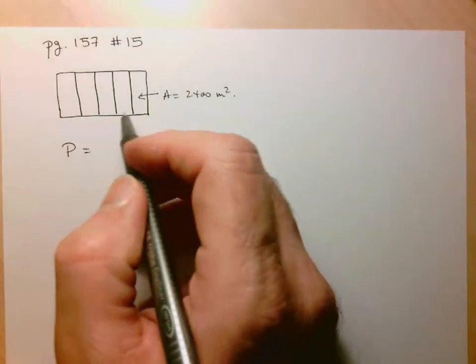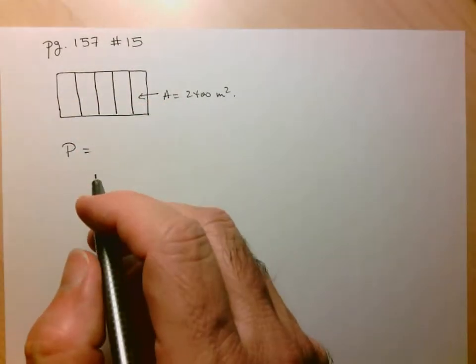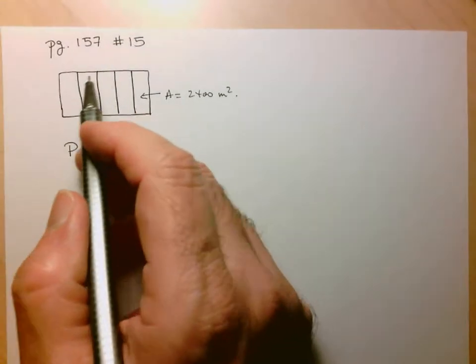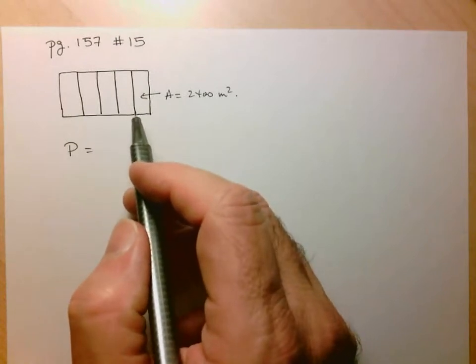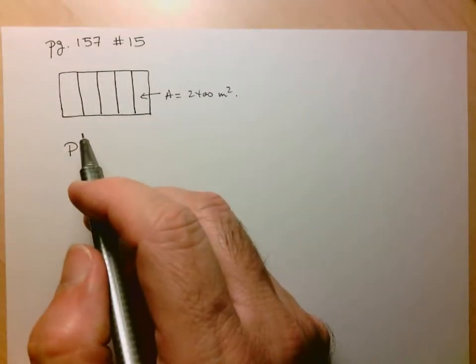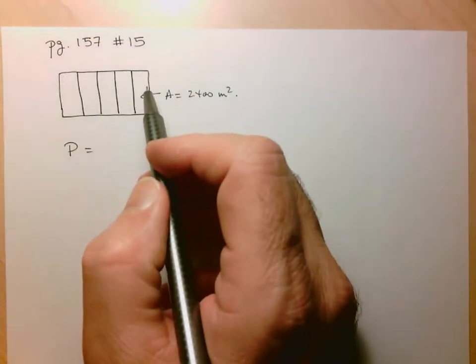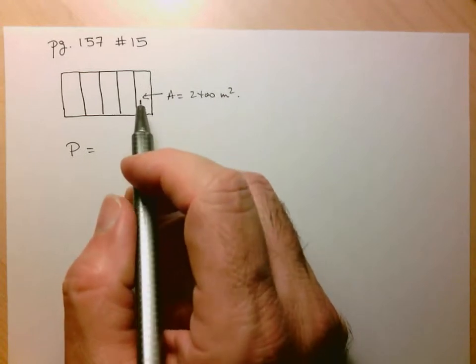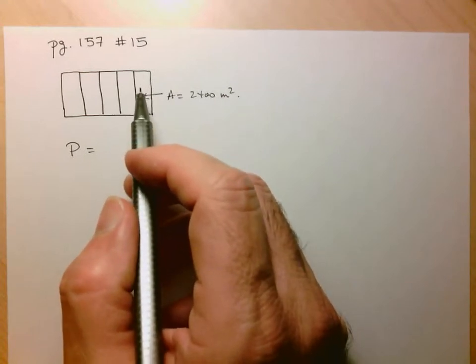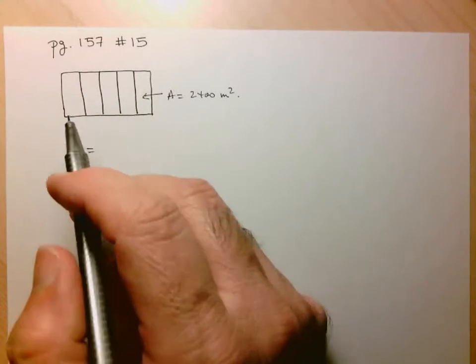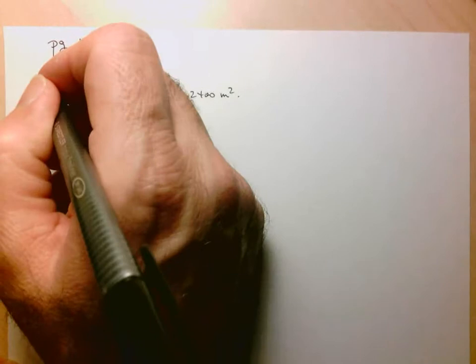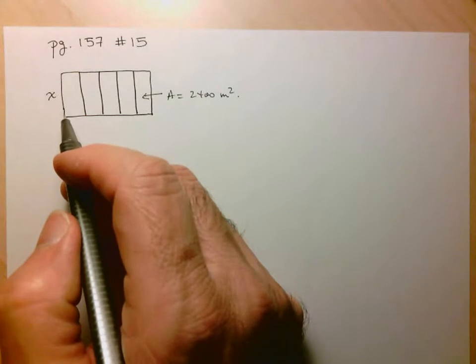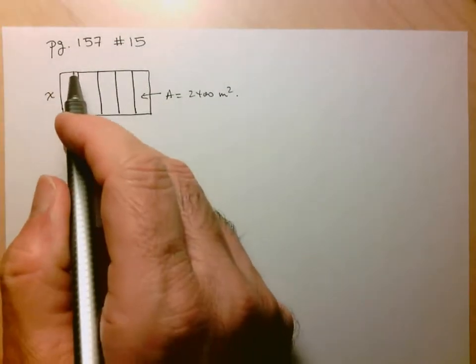So again, as I often do when there's a geometrical aspect to these questions, I'm going to draw pictures. So here we've got five pens side by side, so I think it's safe to assume that there will just be one fence separating them. And we know that the area of any one of these pens is going to be 2400 meters squared. And what I want to minimize here is the perimeter. Now notice here when I say perimeter, I mean all the fencing that is used.